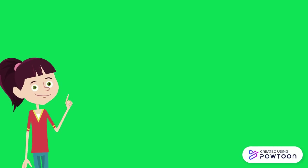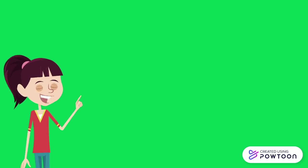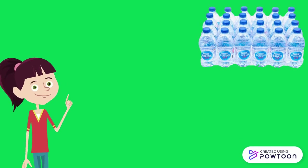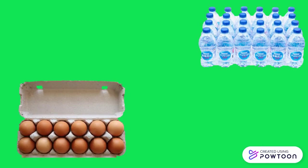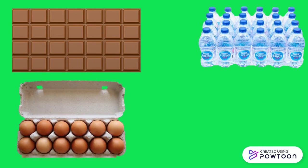We can see every day in our real life organized storage which is formed as a rectangular array. For example, a water bottle pack, an egg carton, a chocolate bar, and a paint box.